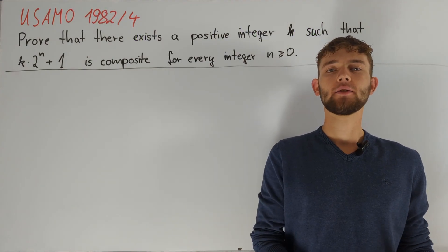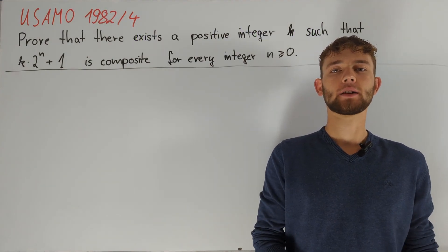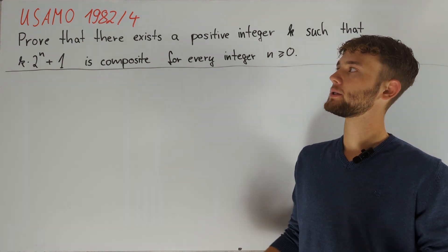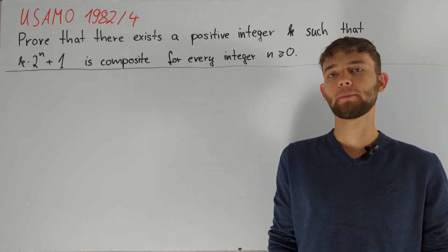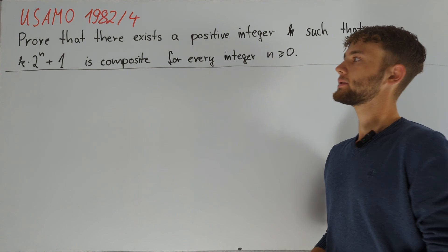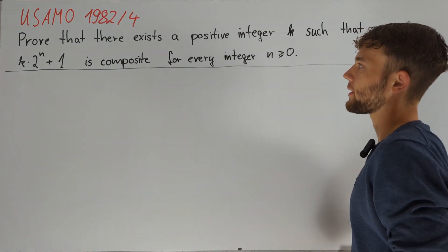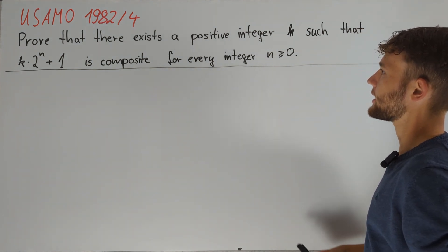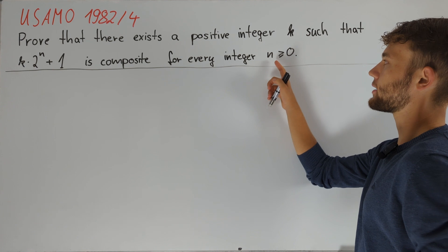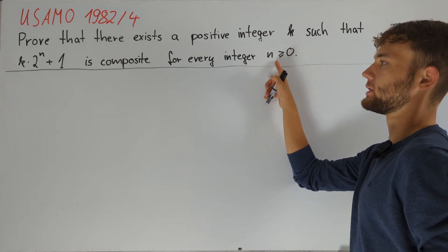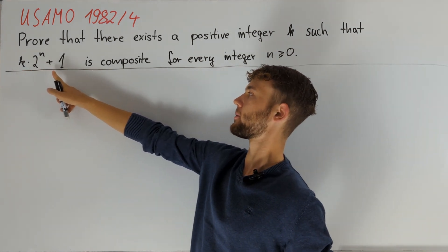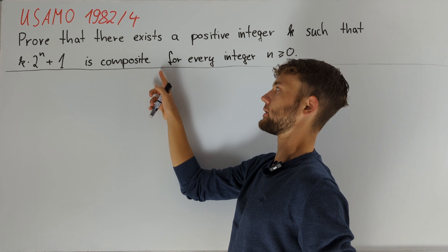Hey guys! In this video I'm going to present an old but nice problem from the US AMO 1982, namely problem 4. We are asked to prove that there exists a positive integer k such that for any integer n greater than or equal to 0, we have that k times 2 to the power of n plus 1 is composite.